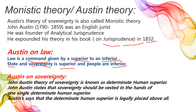Ab dekhte hain ki Austin sovereignty pe kya kehte hain. John Austin ki theory of sovereignty is known as 'determinant human superior.' Isko monastic theory bhi kaha jata hai — is theory ke alag alag names hain.